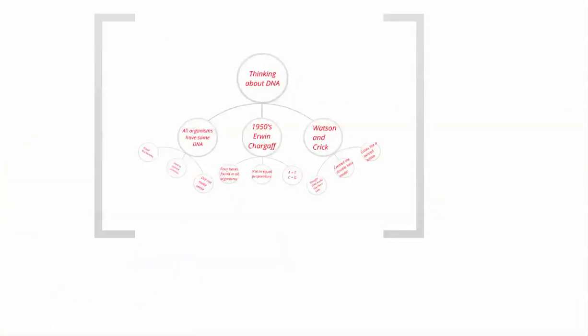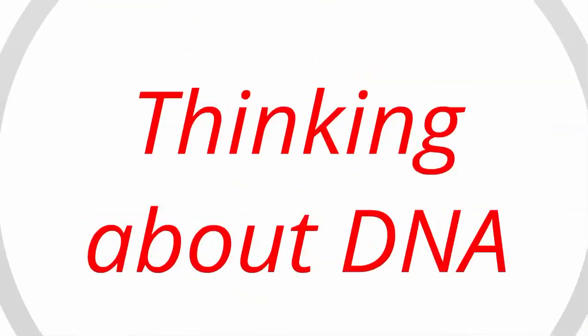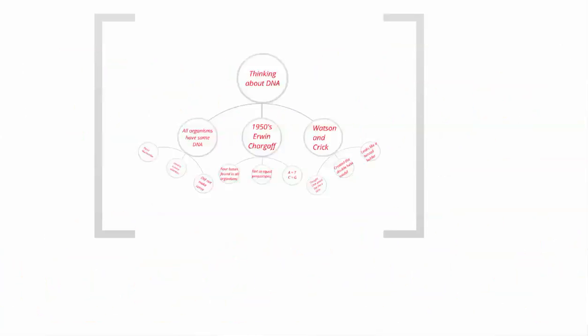Here is the DNA thinking map. Start with the very top — the main title is thinking about DNA. Make a circle at the very top of your paper and write thinking about DNA. Draw three lines from it. The first one says all organisms have some DNA, the second says 1950s Erwin Chargaff, and the third says Watson and Crick.